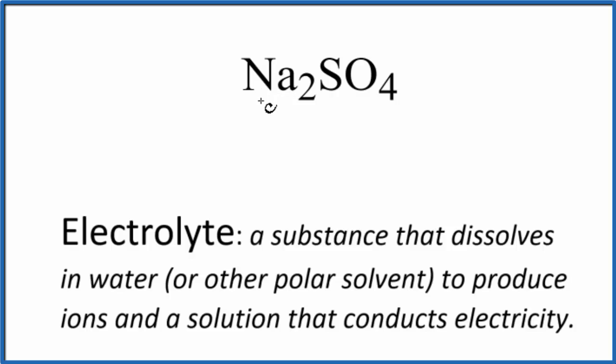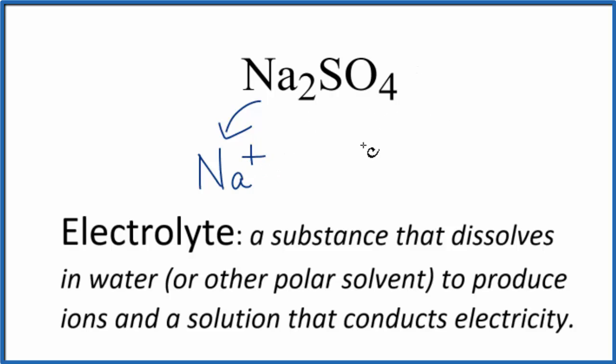Sodium is in group 1 on the periodic table, so that gives us Na+. And then the sulfate ion — that's always the whole thing — SO4²⁻. That's a good one to remember.